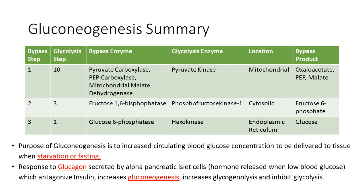Moving on to bypass 2, which corresponds to glycolysis step 3, it involves the reverse action of phosphofructokinase 1 via fructose-1,6-bisphosphatase, occurring in the cytosol, with the product being fructose-6-phosphate. Lastly, bypass 3 corresponds to glycolysis step 1 and is the reverse of hexokinase via glucose-6-phosphatase, to obtain glucose.